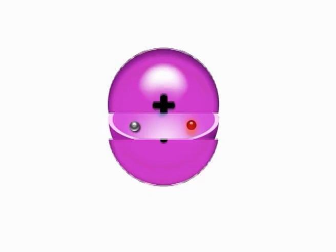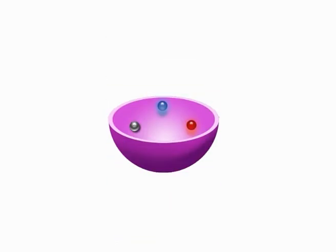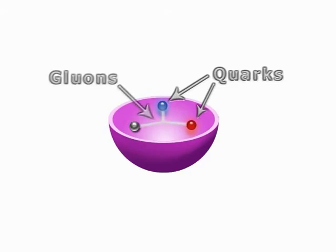Protons and neutrons are made up of even smaller particles called quarks. Inside each proton or neutron, there are three quarks held together by other particles called gluons.